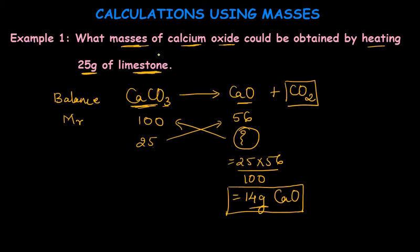To summarize, calculations related to masses from an equation involve three steps: first, write the equation; second, balance the equation; and third, calculate the molecular masses of the required compounds.